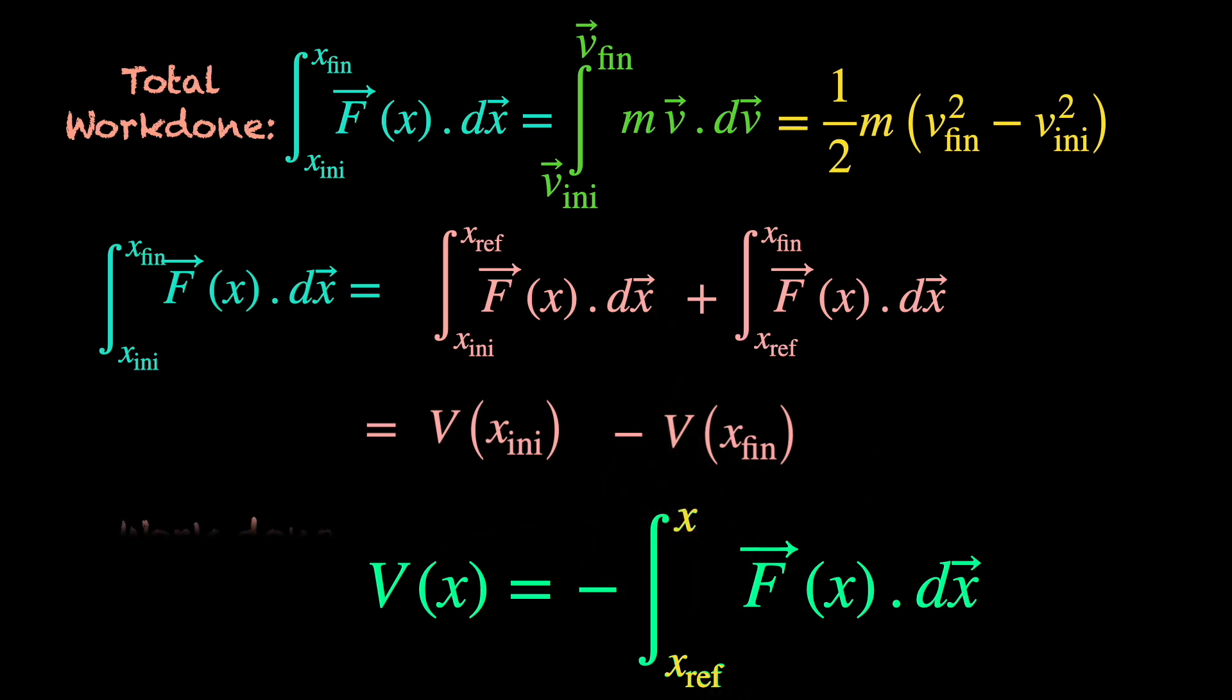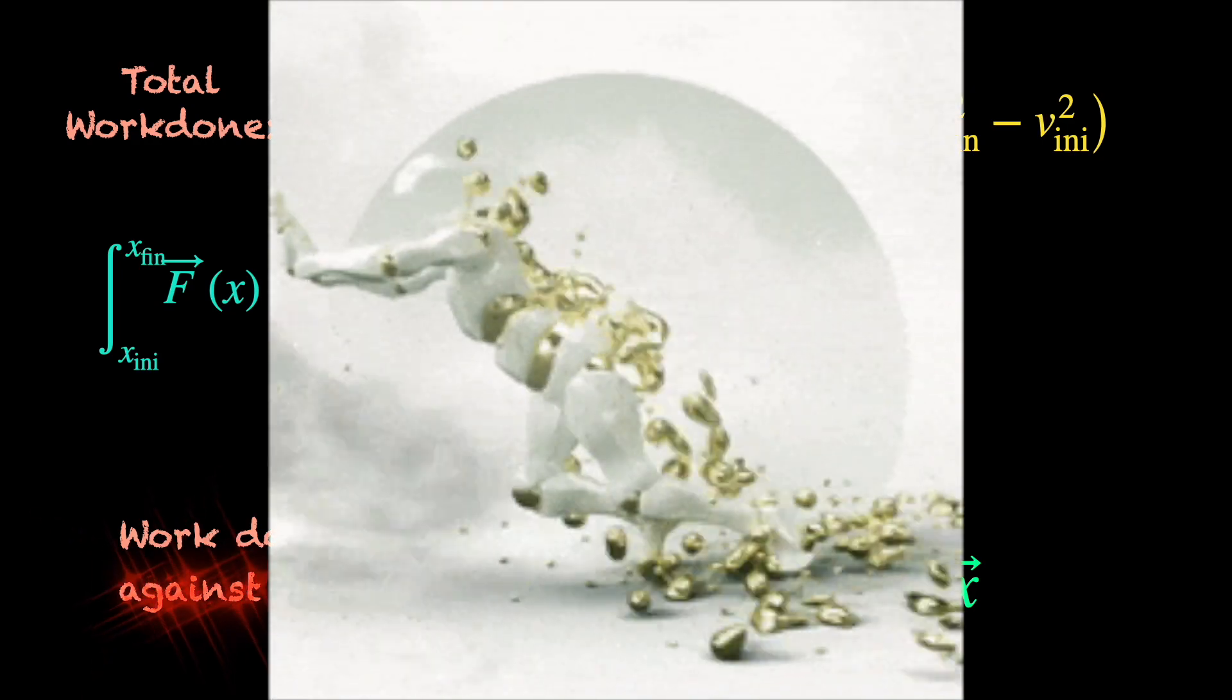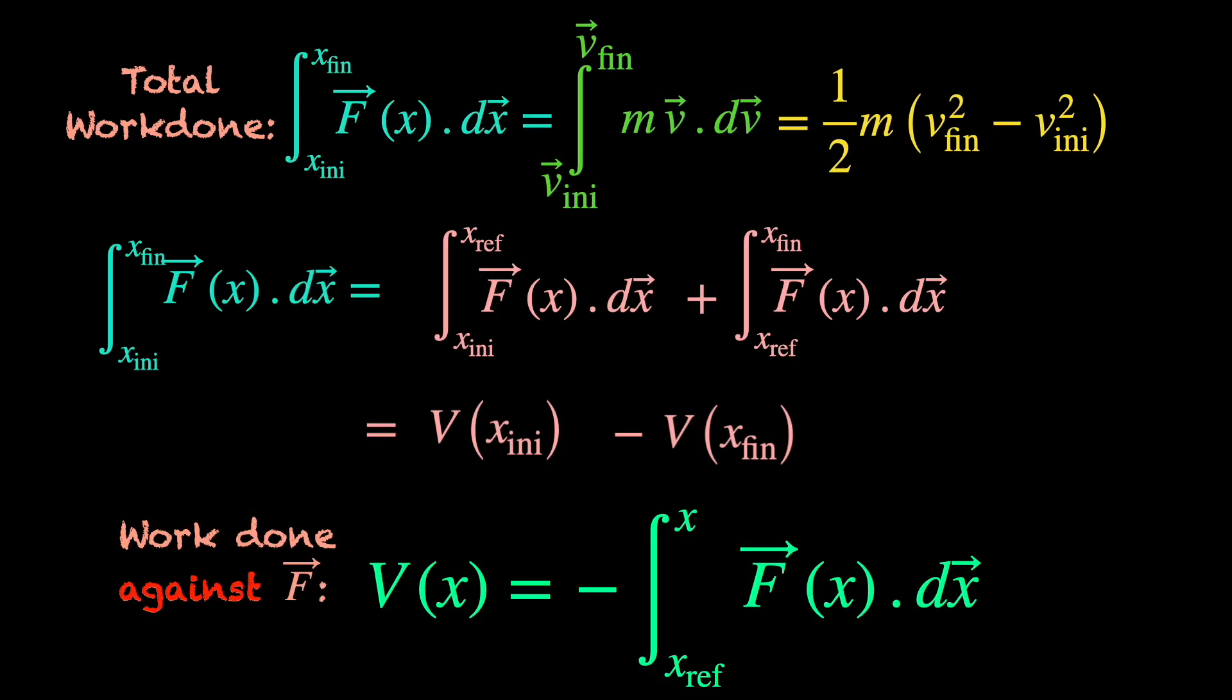This function v of x for any location x is defined as the integral of f dot dx from the chosen reference location x reference to x with a minus in front. Physically, it signifies the work needed to push the object from the reference location x reference to the location x against the force. f dot dx is the work done by the force, right? So, minus f dot dx means work done against the force. It is crucial to realize that we can define such a function v of x depending purely on the position variable because we began with a force f that depended only on the position variable.